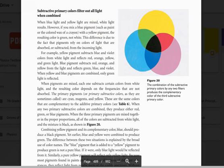Subtractive primary colors filter out all light when combined. When blue light and yellow light are mixed, white light results. However, if you mix a blue pigment such as paint or the colored wax of a crayon with a yellow pigment, the resulting color is green, not white. The difference is due to the fact that pigments rely on colors of light that are absorbed or subtracted from the incoming light.